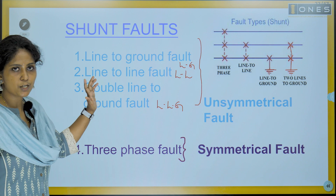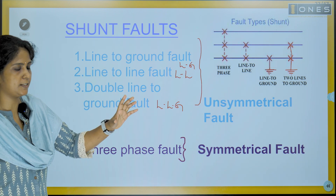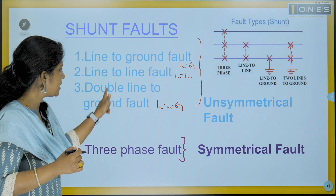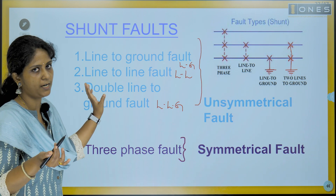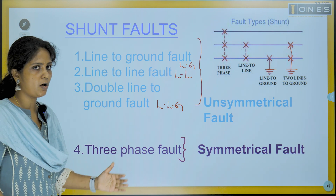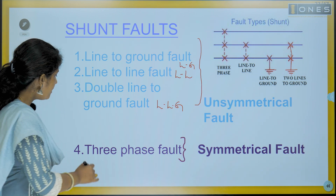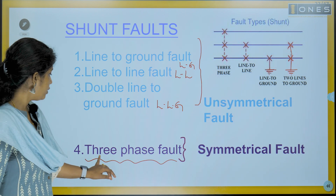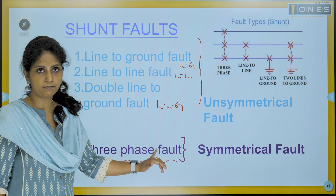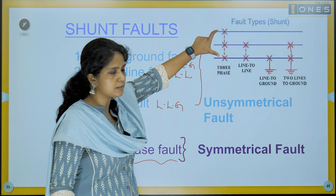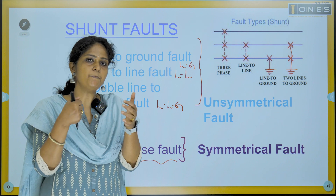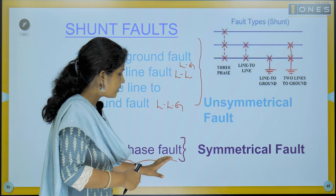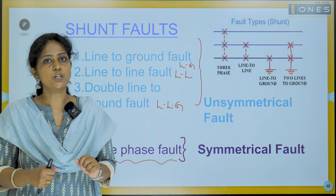So these are the shunt faults or short circuit faults. Contact between a conductor and the ground gives line to ground fault; between two conductors gives line to line fault; and double line to ground is the LLG fault. We also have a fourth fault which is also a shunt fault — the three-phase fault, which is also a short circuit fault.